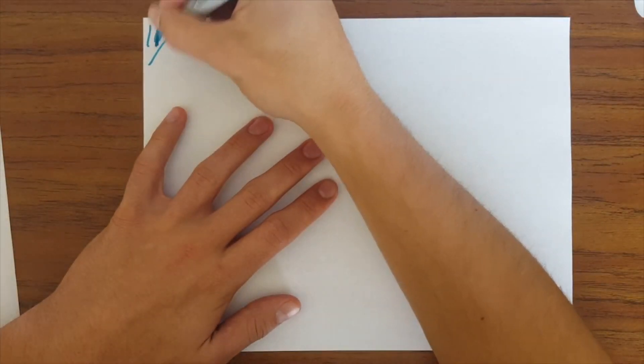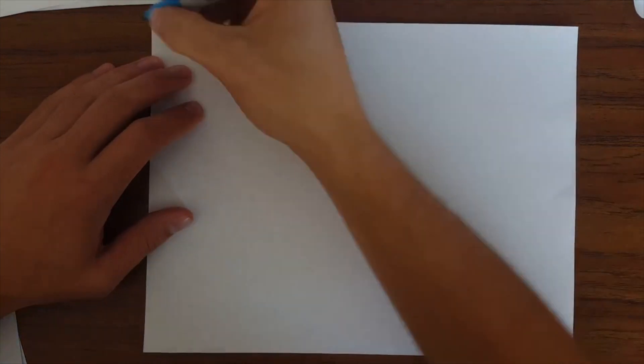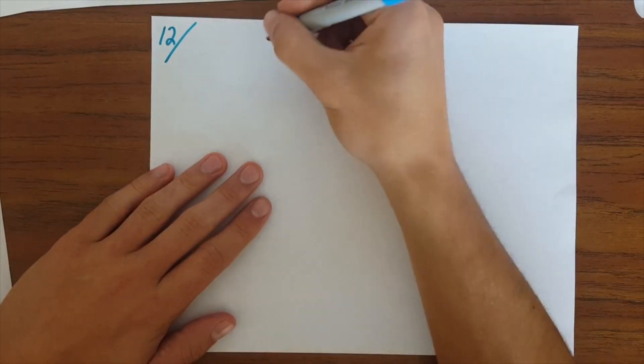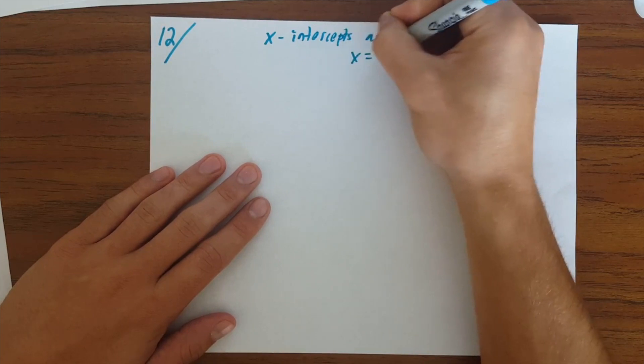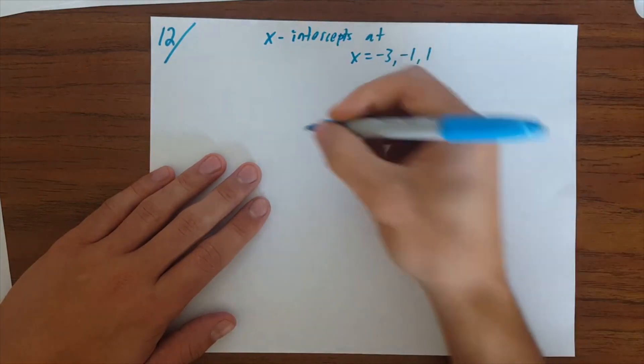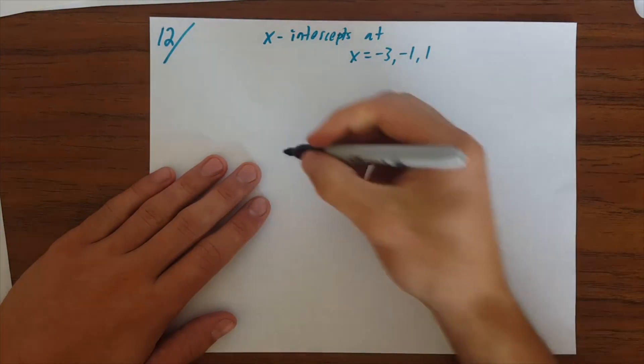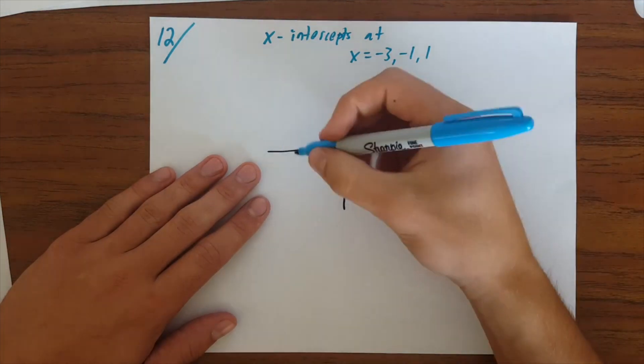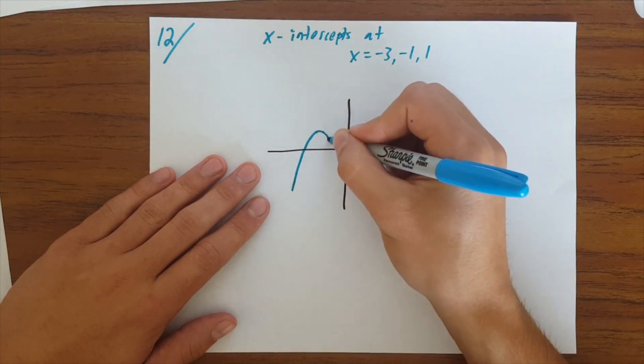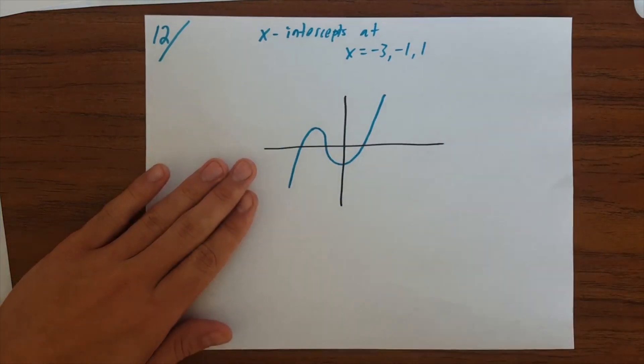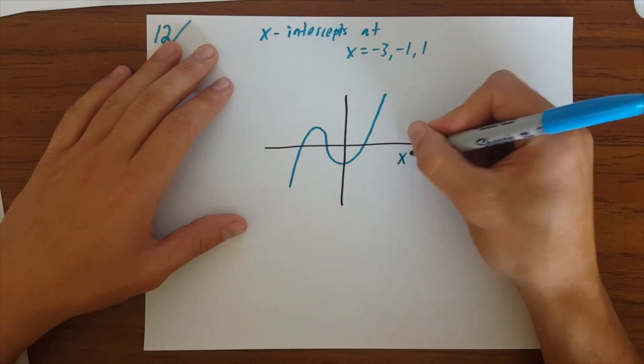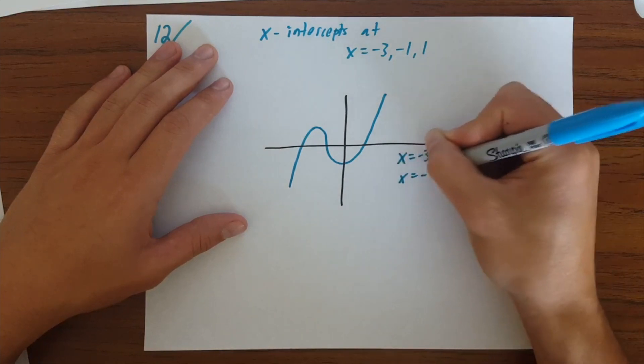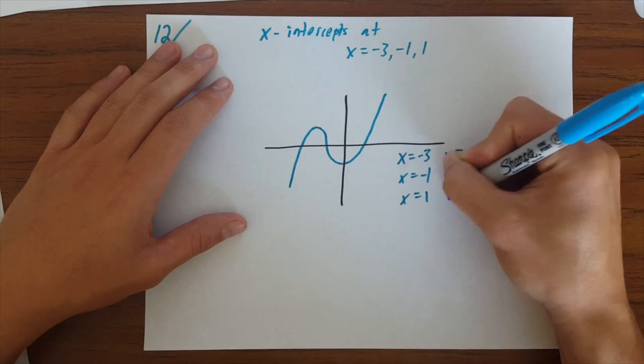All righty. So this is, this is 12 now. All righty. This is the last one that I'll do. This is 12, and you have x-intercepts at x equals minus 3, minus 1, and 1. And so what that means is you're going to have some type of function, and it's going to intercept the x-axis at minus 3, minus 1, and 1. Okay? And what that means is that, when x equals minus 3, y equals 0. When x equals minus 1, y equals 0. And when x equals 1, y equals 0. Okay?